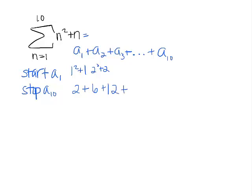4 squared plus 4 gives me 20. 5 squared plus 5 gives me 30. 6 squared plus 6 gives me 42. 7 squared plus 7. 8 squared plus 8. 9 squared plus 9.